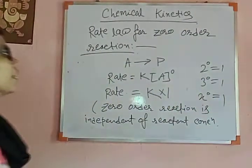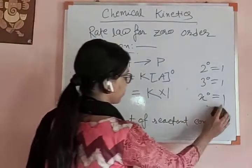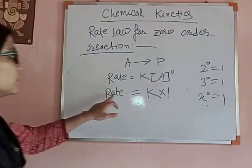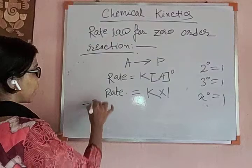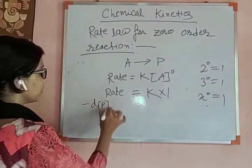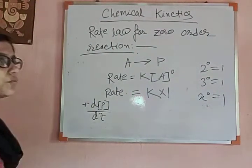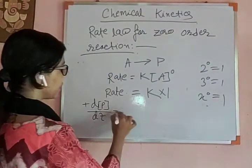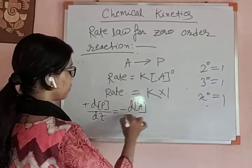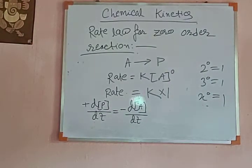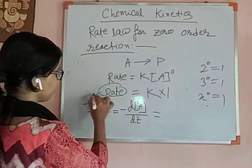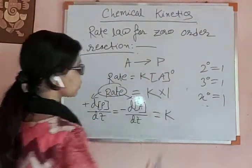How can the rate law be derived? There are two methods to write down this rate. You can write it according to product, that is D[P]/DT — whenever writing with respect to product there will be a positive sign. When writing with respect to reactant, it will be minus D[A]/DT. So D[P]/DT or minus D[A]/DT equals K into 1, which means K.